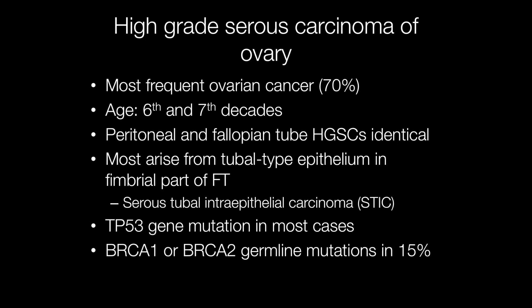The most common type of ovarian cancer is high-grade serous carcinoma, and these account for approximately 70% of ovarian cancers. The tumours tend to occur around the 6th and 7th decades. They can arise from the peritoneum and the fallopian tube as well as the ovary, and high-grade serous carcinomas are identical no matter where they arise.